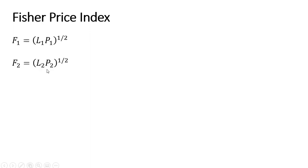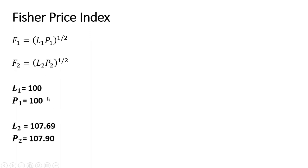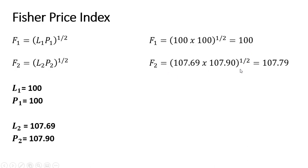And for year two, the Fisher Price Index is a similar calculation but using the year two indices. The Fisher Price Index in year one is 100. And the Fisher Price Index in year two is going to fall between the Laspeyres and Paasche Price Index, and we get a value of 107.79.